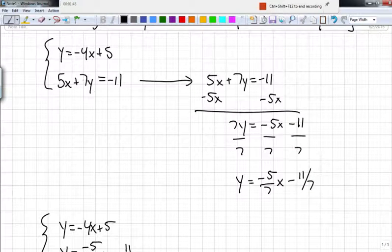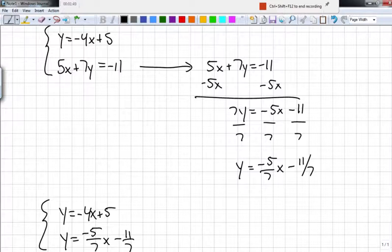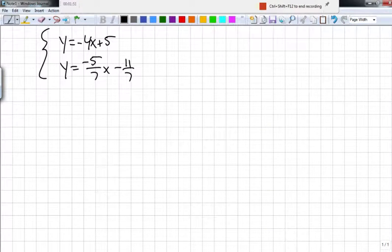and y equals negative 5/7 x minus 11/7. So I didn't change anything. This system and this system are the same thing, I just wanted to rewrite it so I could enter it more easily in the calculator.